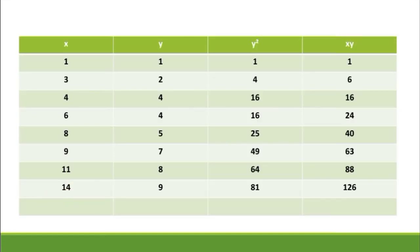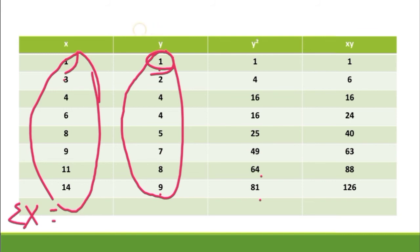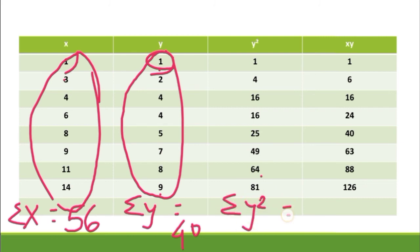The values of x and y are given. Finding y²: 1²=1, 2²=4, 4²=16, 4²=16, 5²=25, 7²=49, 8²=64, 9²=81. Then xy is found as x times y for each pair. The summations are: sigma x = 56, sigma y = 40, sigma y² = 256, and sigma xy = 364.